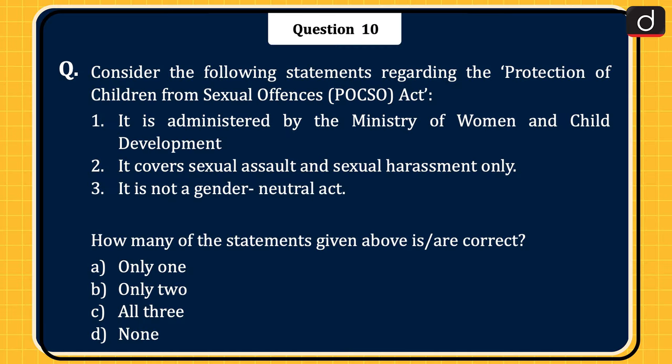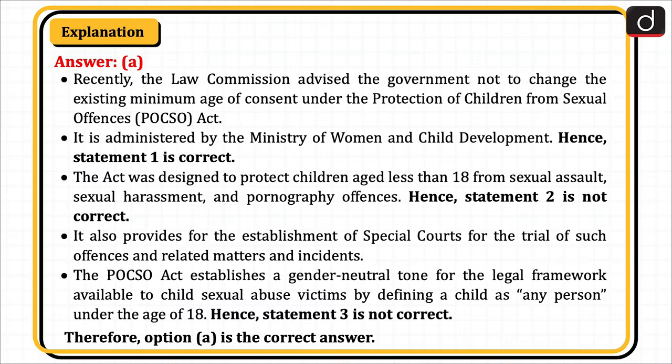The last question: consider the following statements regarding the Protection of Children from Sexual Offences, i.e. POCSO Act. Statement 1: it is administered by the Ministry of Women and Child Development. Statement 2: it covers sexual assault and sexual harassment only. Statement 3: it is not a gender-neutral act. How many of the statements are correct? Only one, only two, all three, or none? The correct answer is option A, only one. Recently, the Law Commission advised the government not to change the existing minimum age of consent under the POCSO Act. It is administered by the Ministry of Women and Child Development. Hence, statement 1 is correct. The Act protects children aged less than 18 from sexual assault, sexual harassment and pornography offences. Hence, statement 2 is not correct. The POCSO Act establishes a gender-neutral tone by defining a child as any person under the age of 18. Hence, statement 3 is not correct. Therefore, option A is the correct answer.